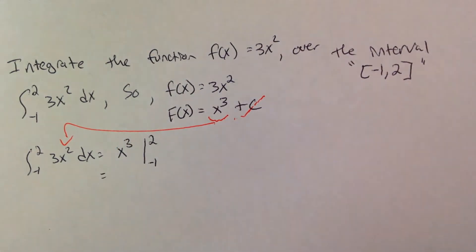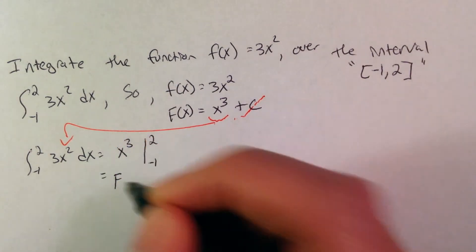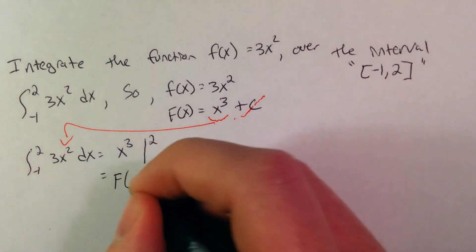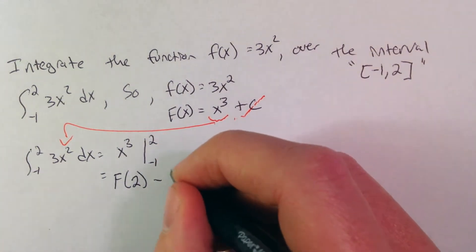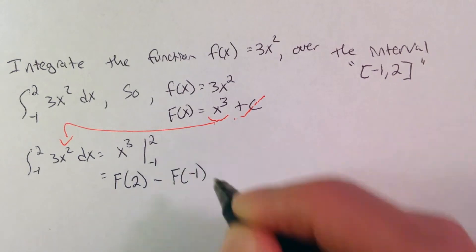From here now, that ends up being equal to my antiderivative from 2, when 2 is plugged in for x, minus the antiderivative of negative 1 plugged in for x.